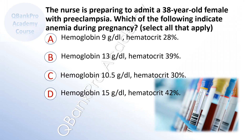The nurse is preparing to admit a 38-year-old female with preeclampsia. Which of the following indicate anemia during pregnancy? Select all that apply. A. Hemoglobin 9, hematocrit 28%. B. Hemoglobin 13, hematocrit 39%. C. Hemoglobin 10.5, hematocrit 30%. D. Hemoglobin 15, hematocrit 42%.